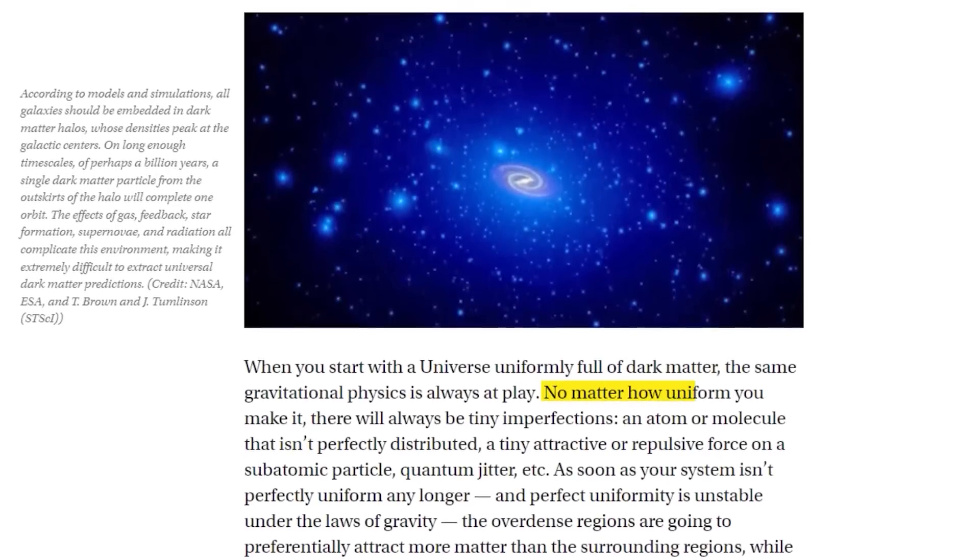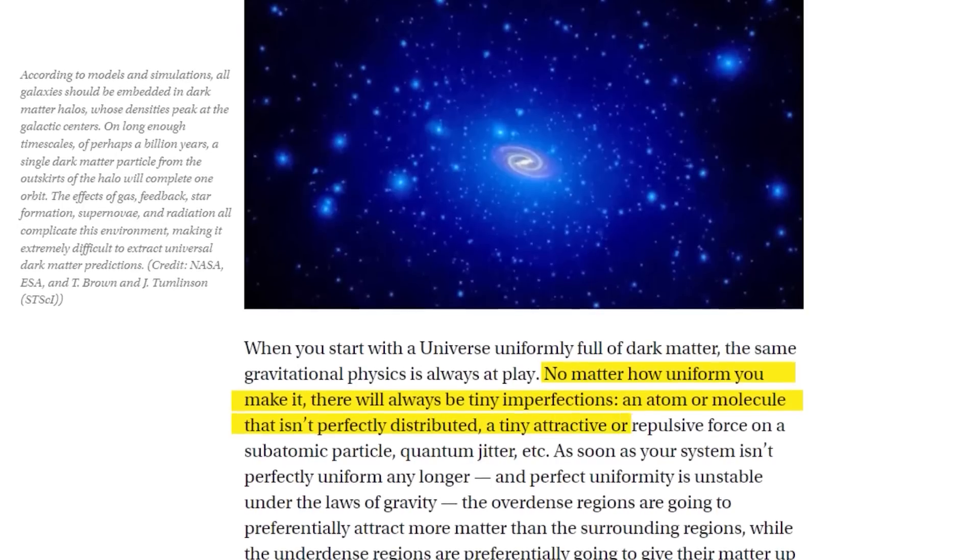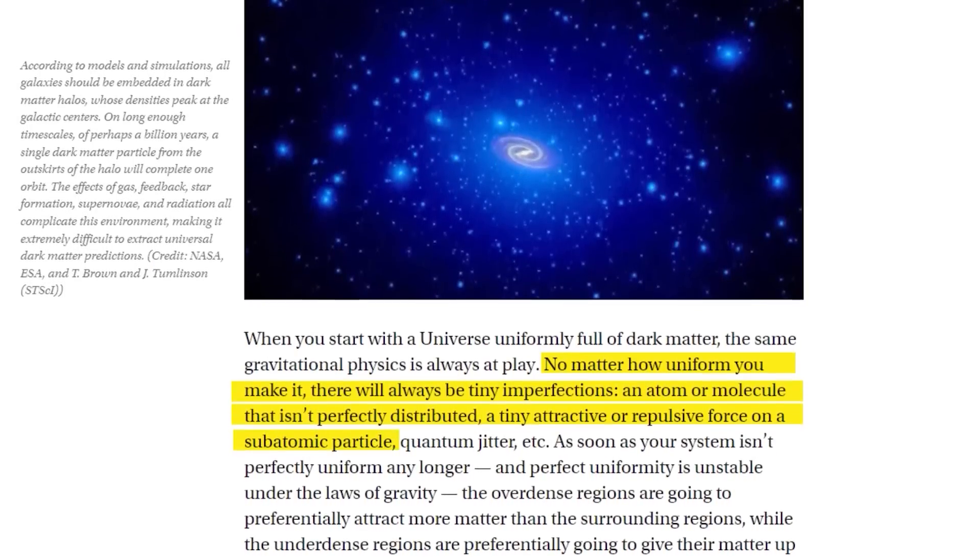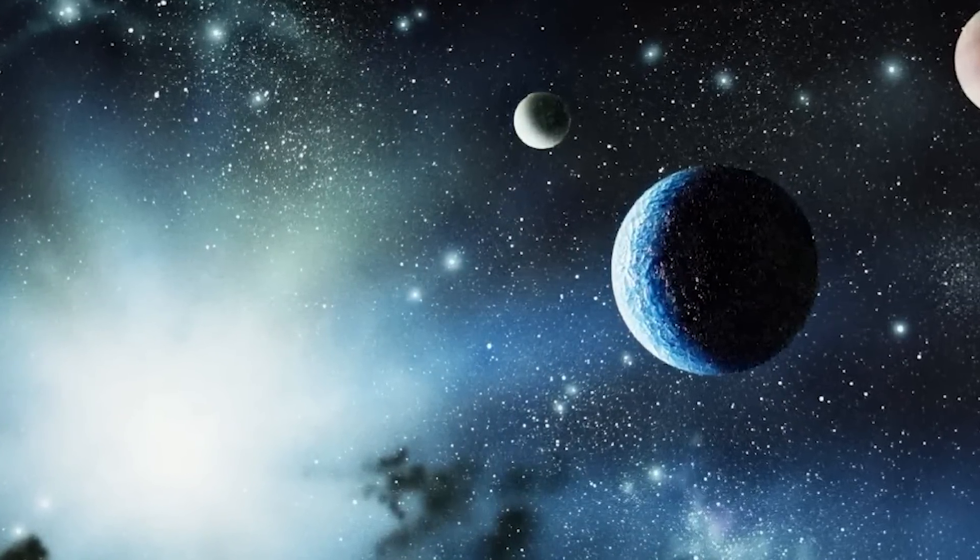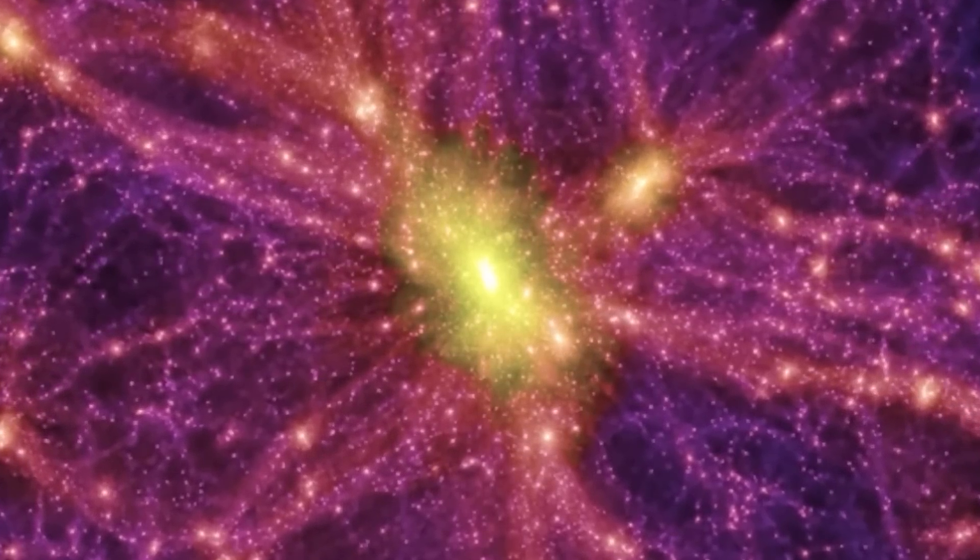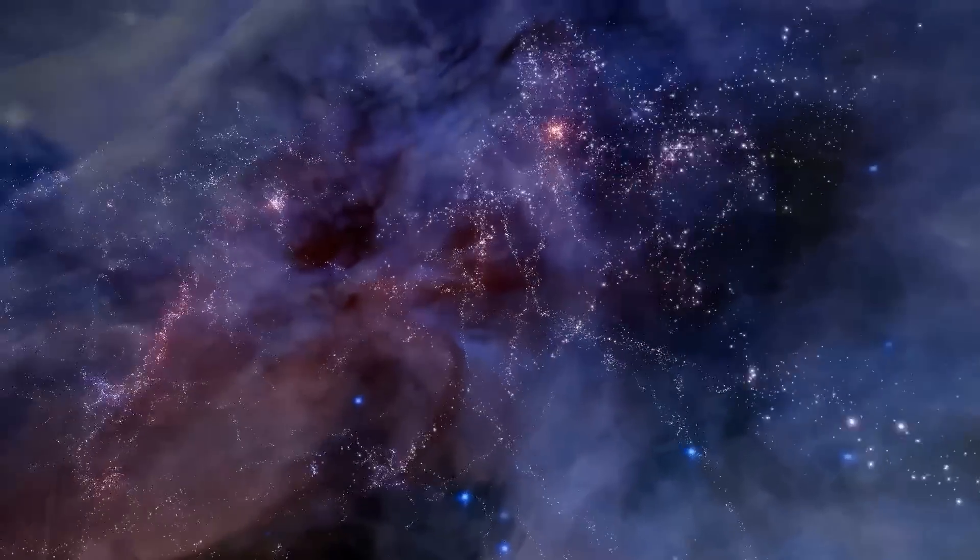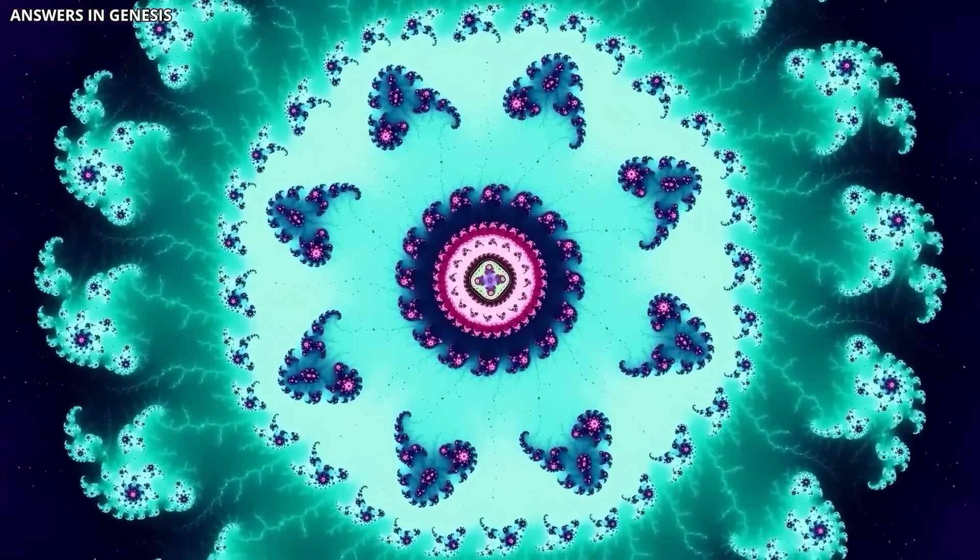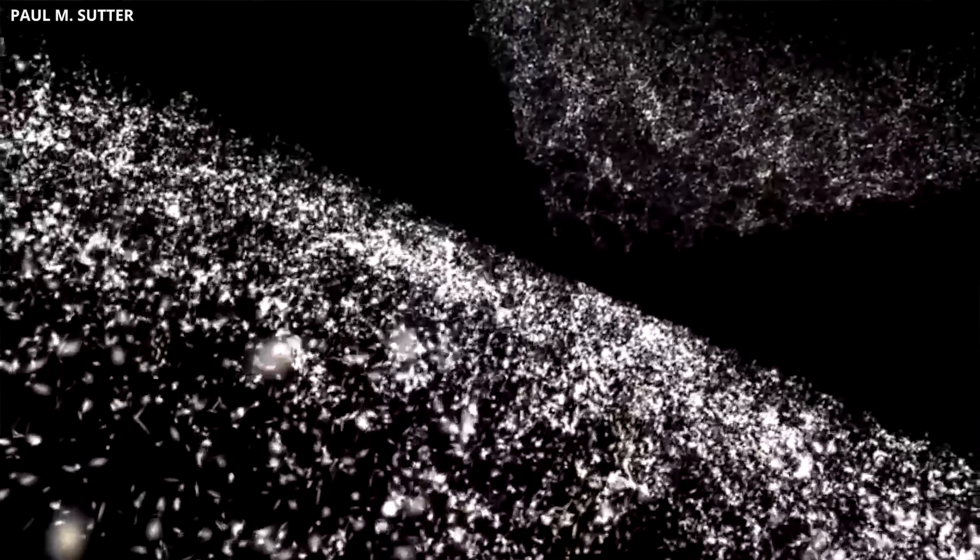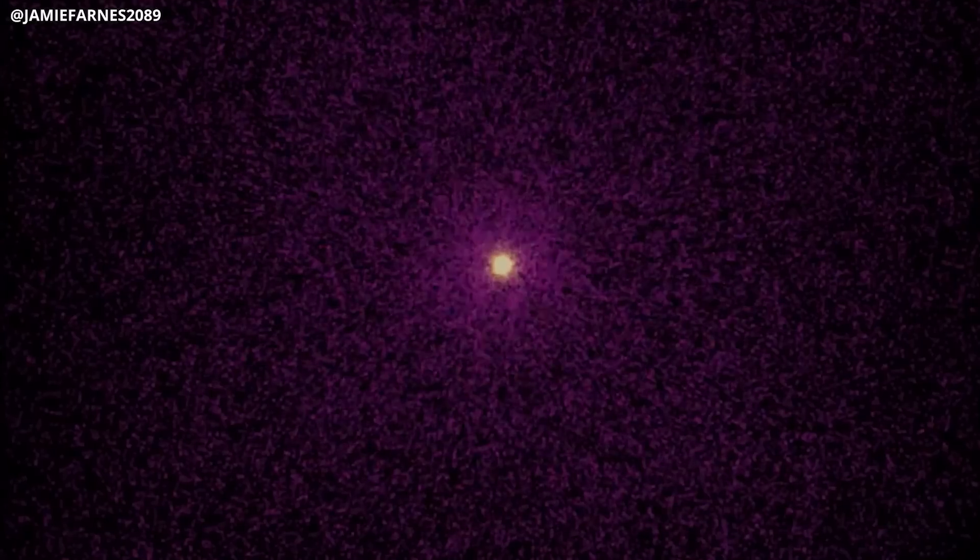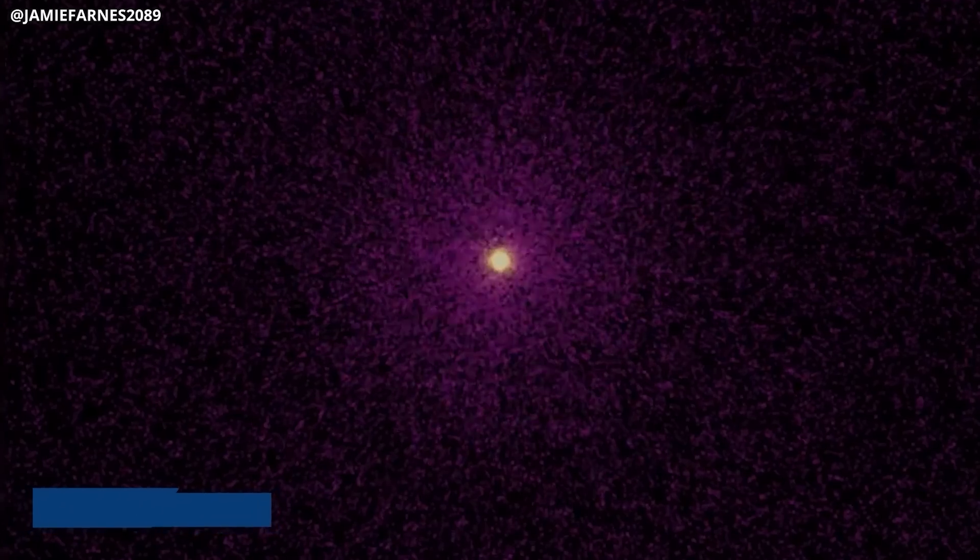No matter how uniform you make it, tiny imperfections will always be present. A tiny attractive or repulsive force on a subatomic particle, an atom or molecule that isn't allocated well, or a quantum jitter. And as soon as your system isn't even any longer and total uniformity is unstable under the laws of gravity, the overdense regions will partially draw more matter than the neighboring regions. On the other hand, the underdefined areas will partially give their matter up to the surrounding regions. If you start with a single overdense cluster and allow it to grow long enough, you will have a massive dark matter halo, diffuse, spheroidal, and with its highest density in the center.